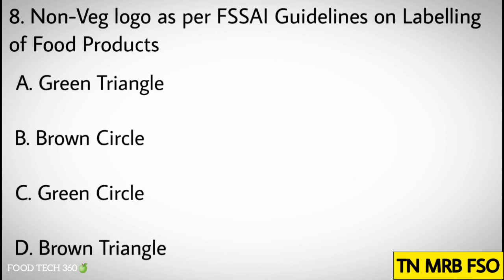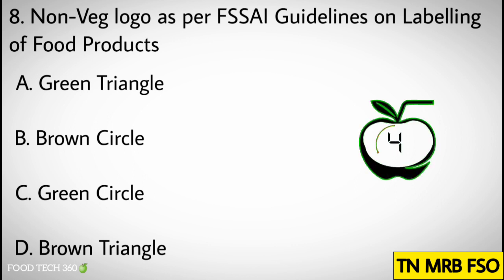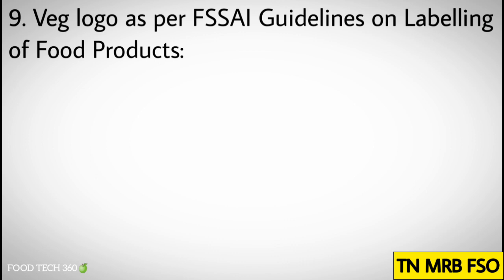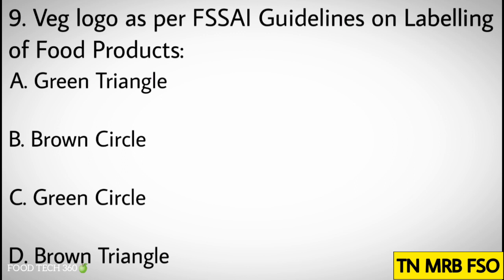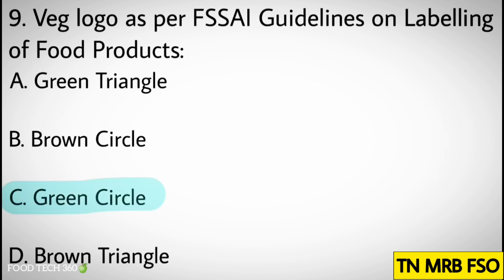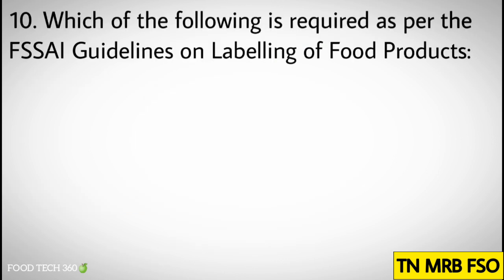Question number eight: Non-veg logo as per FSSAI guidelines on labeling of food products — options: A) Green triangle, B) Brown circle, C) Green circle, D) Brown triangle. Correct answer: C) Green circle. Question number nine: Which logo as per FSSAI guidelines on labeling of food products? Options: A) Green triangle, B) Brown circle, C) Green circle, D) Brown triangle. Correct answer: C) Green circle.